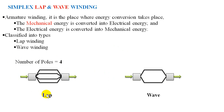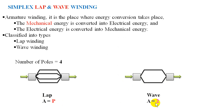With respect to your number of poles, wave will always have two carbon brushes. But wave can also have more than two brushes — this has good influence with respect to commutators, ensuring good commutation. That is why we can practically have more than two carbon brushes. For lap, the number of parallel paths A equals P. For wave, A equals two.